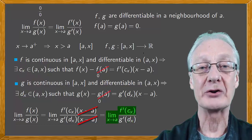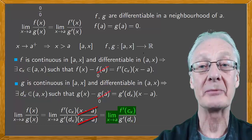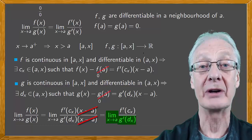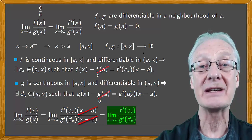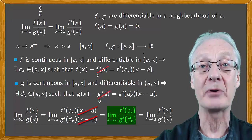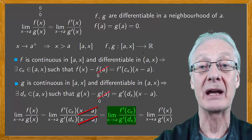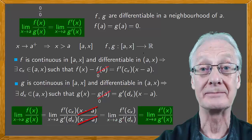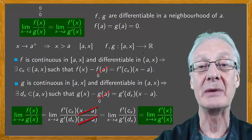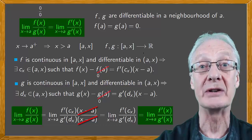We have on top f' of something very close to a and on the bottom g' of something very close to a. This is the limit when x tends to a of f'(x) over g'(x) and we've arrived at what we wanted. That the limit of the quotient is equal to the limit of the quotient of the derivatives.